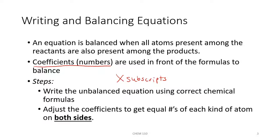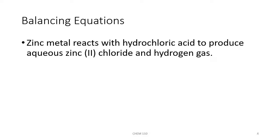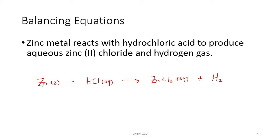We're going to do a few practice problems to figure out what our balanced equations would be. Zinc metal reacts with hydrochloric acid to produce aqueous zinc chloride and hydrogen gas. First we need to convert this into chemical formulas. Zinc metal would be solid zinc, reacting with hydrochloric acid, which is HCl aqueous. We're producing zinc chloride, ZnCl2, which will be aqueous, and hydrogen gas. Hydrogen is one of our diatomic molecules, so be sure to write H2.